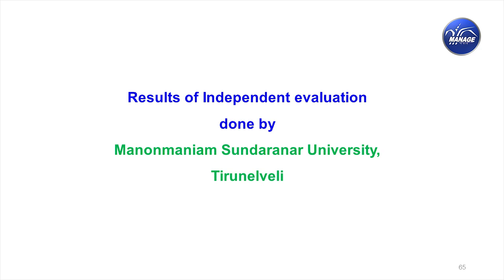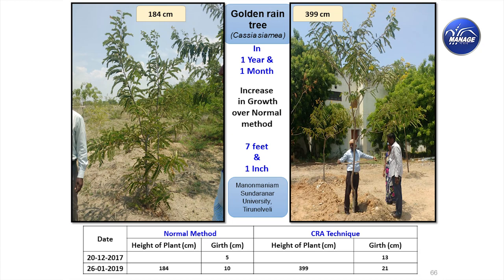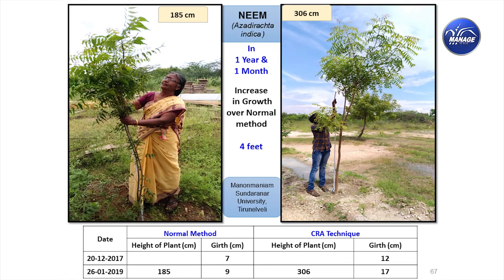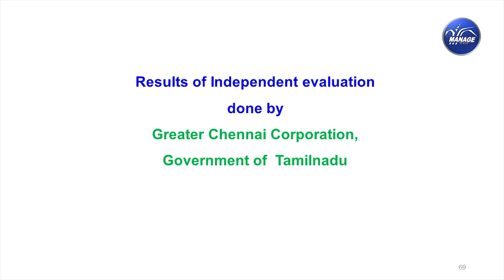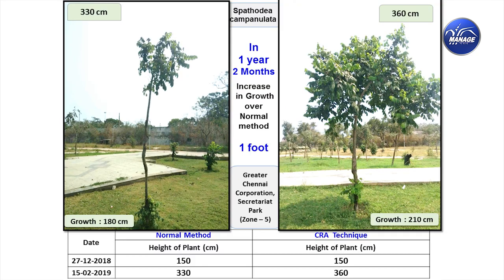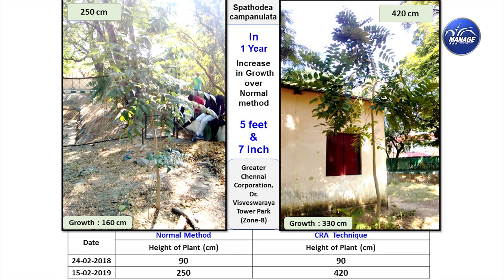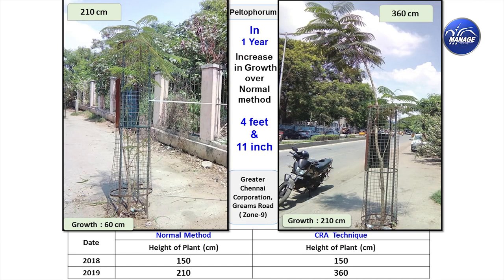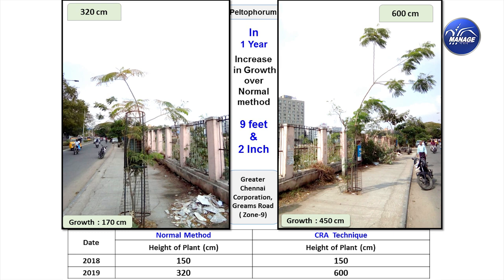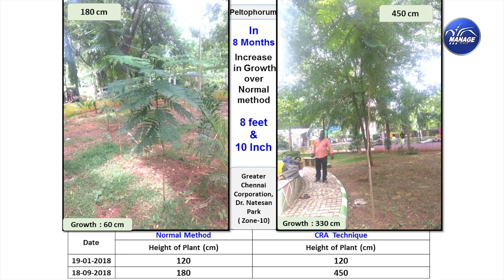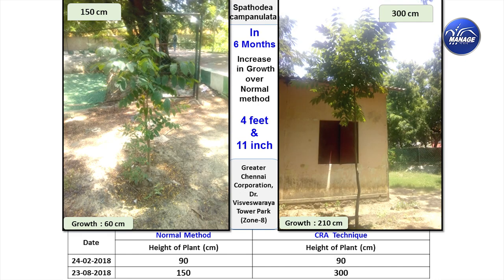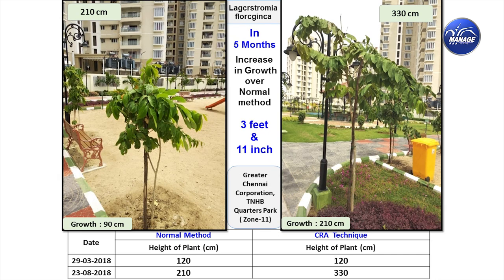For academic validation, Manonmaniam Sundaranar University conducted trials: rain tree showed 7 feet 1 inch difference; neem — 4 feet in 1 year 1 month; Pungamia — 4 feet 1 inch. In Chennai Corporation trials: Spathodia — 1 foot height difference but significant biomass increase; another seedling — 5 feet 7 inches difference; Peltophorum — 4 feet 11 inches in 1 year; another location — 9 feet 2 inches; another species — 3 feet 3 inches in 1 year; Peltophorum in another park — 8 feet 10 inches; Spathodia within 6 months — 4 feet 11 inches.